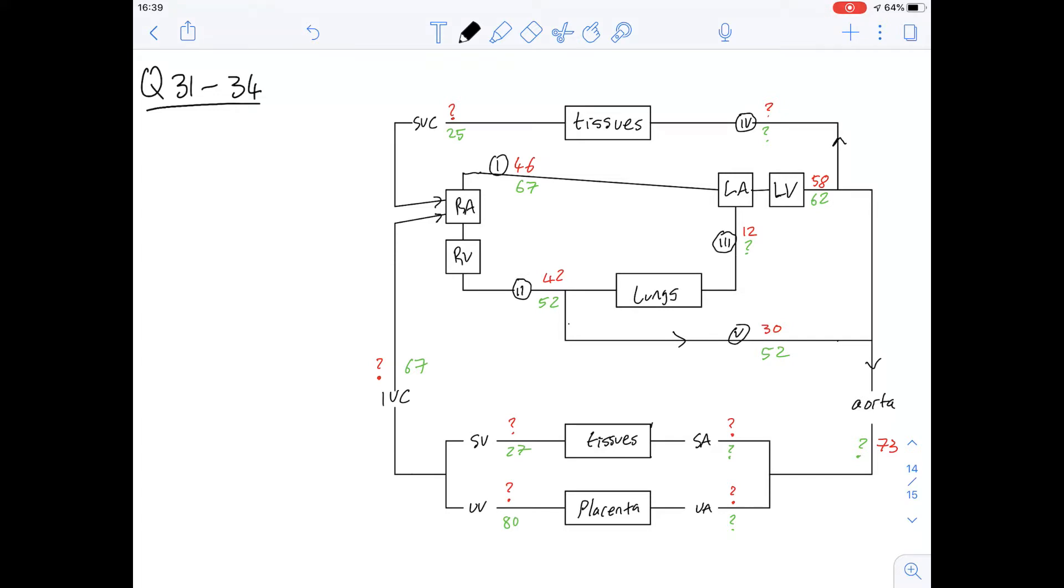So the red numbers represent the percentage of the combined output of the two ventricles or the CVO, which is combined ventricular output. And then the green numbers represent the oxygen saturation of the blood at that point. And of course some values are missing, but we can go over that a little bit later. And they've pointed out five different points here, and these are called shunts.